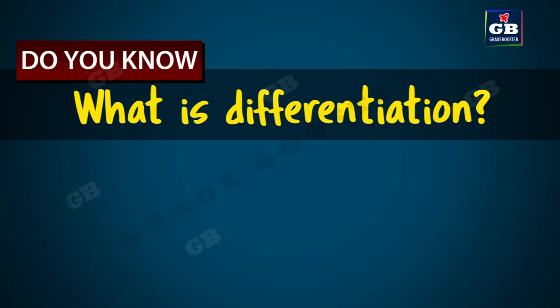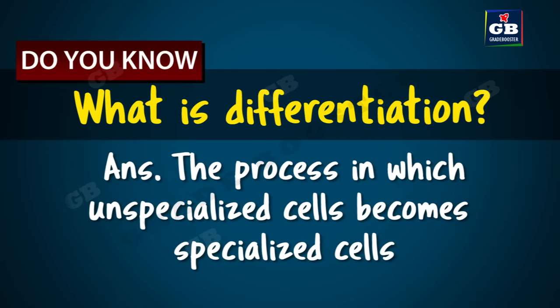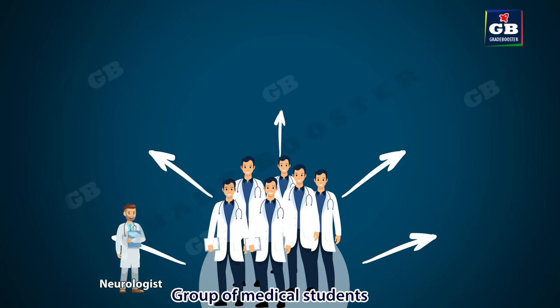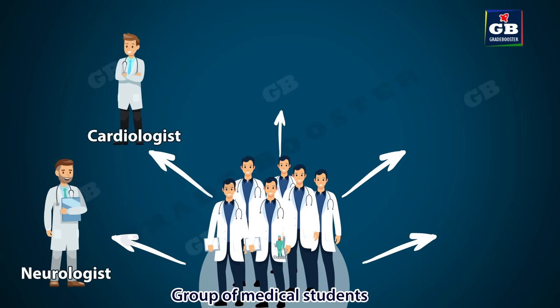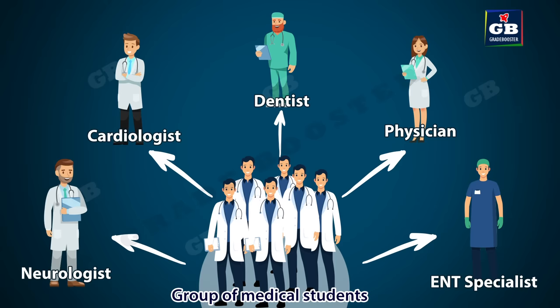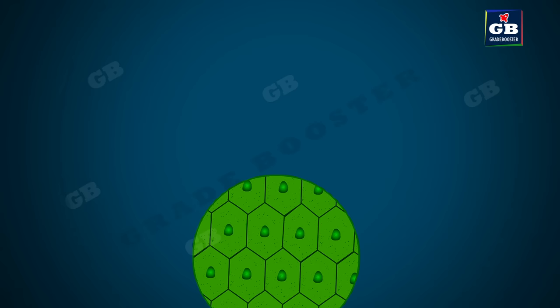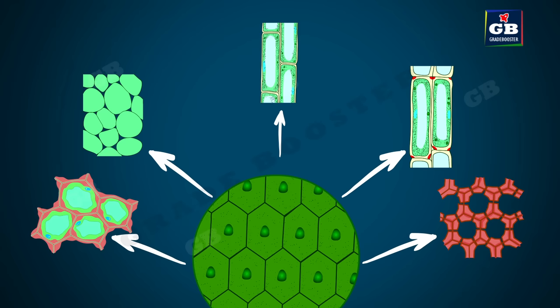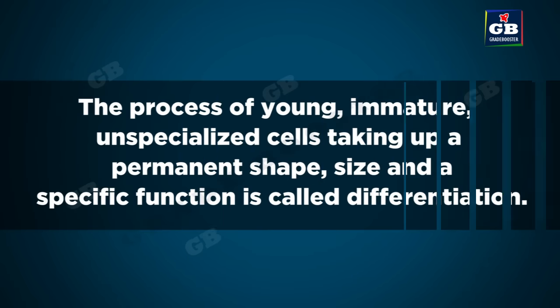Do you know what is differentiation? It is the process in which unspecialized cells become specialized cells. We can compare the unspecialized cells to students of a medical college. After they graduate, they may take up a specialization and become a specialist. In the same way, young immature unspecialized cells like meristematic cells get differentiated into permanent tissue with specific functions. So the process of young immature unspecialized cells taking up a permanent shape, size and a specific function is called differentiation.